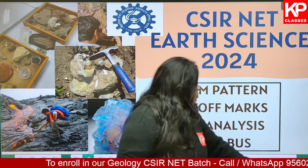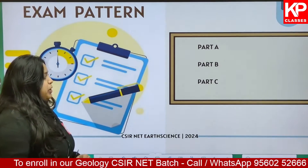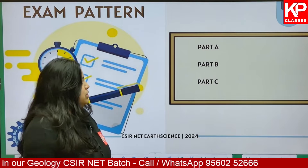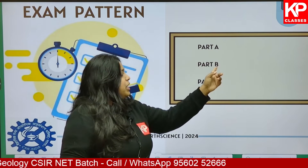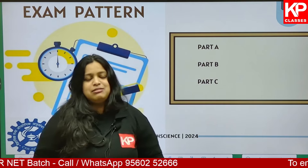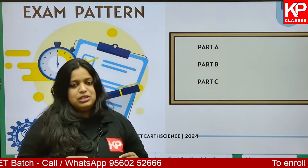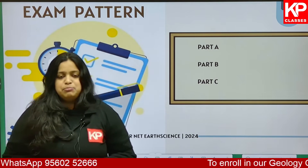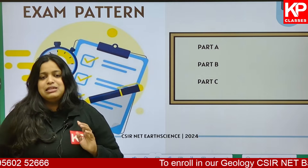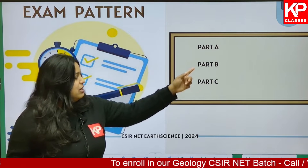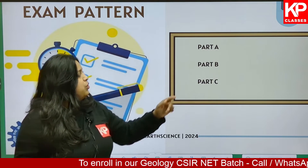When it comes to the NET CSIR Earth Science paper, there are three parts: Part A, Part B, and Part C. Part A is strictly for the aptitude section. Part B and Part C are for the subjects — Earth Science, Atmospheric Science, Planetary Science, and Ocean Science questions will be asked in these two sections.